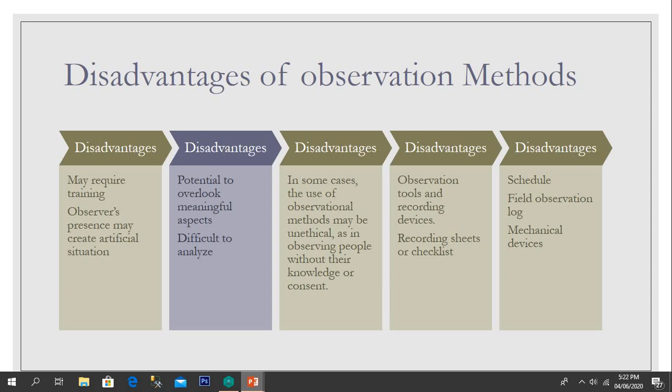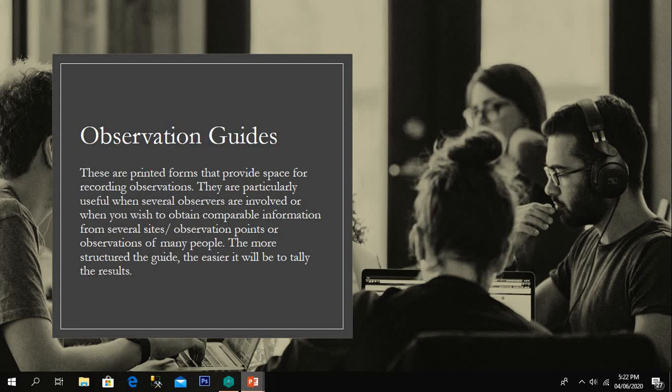Observation tools and recording devices include recording sheets or checklists, schedule field observation logs, and mechanical devices. Observation guides are printed forms that provide space for recording observations. They are particularly useful when several observers are involved, or when you wish to obtain comparable information from several sites or many people. The more structured the guide, the easier it will be to tally the results.